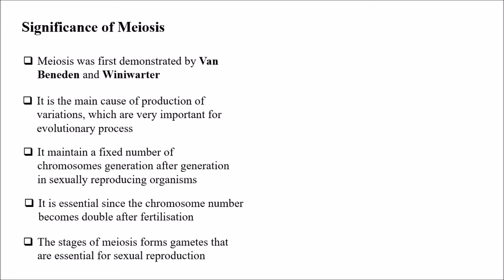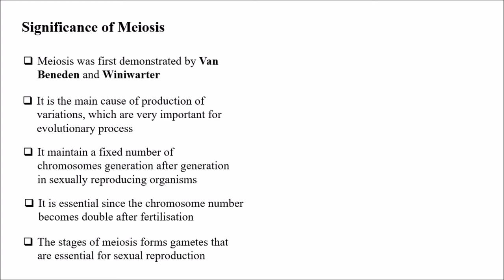This process is very important; otherwise the chromosomal number becomes doubled — it becomes 2n after fertilization. The stages of meiosis form gametes that are essential for sexual reproduction.